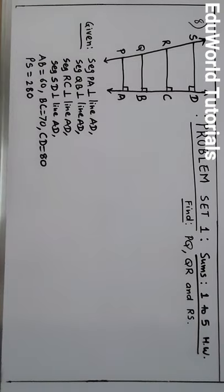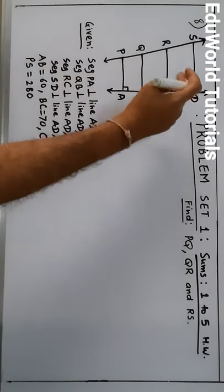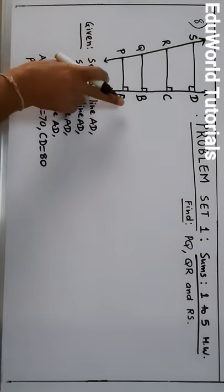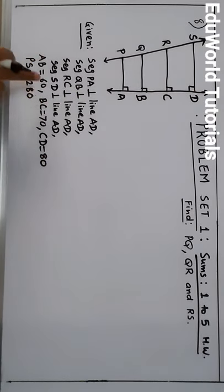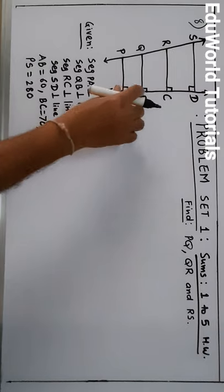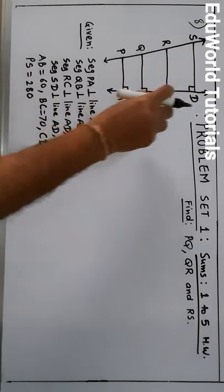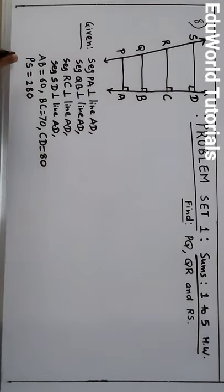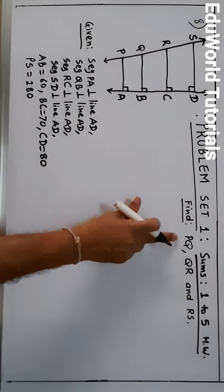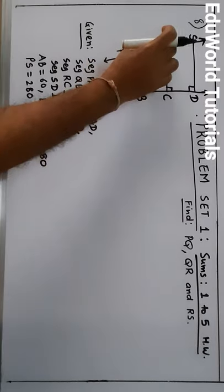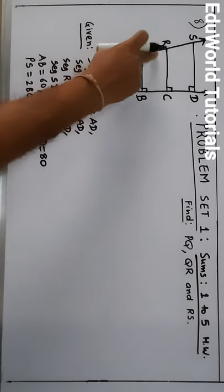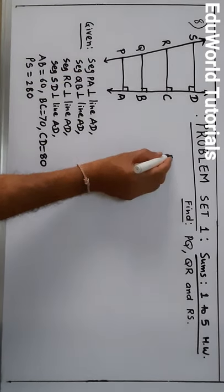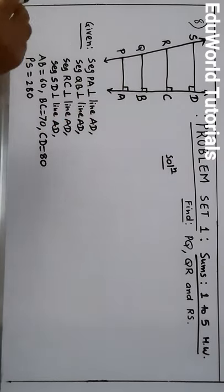Now sum number 8. In this sum, it is said that seg PA, seg QB, seg RC, seg SD are all perpendicular to line AD. AB is 60, BC is 70, CD is 80. PS is 280. We have to find lengths of PQ, QR, and RS. We can recall the property of three parallel lines and their transversals.